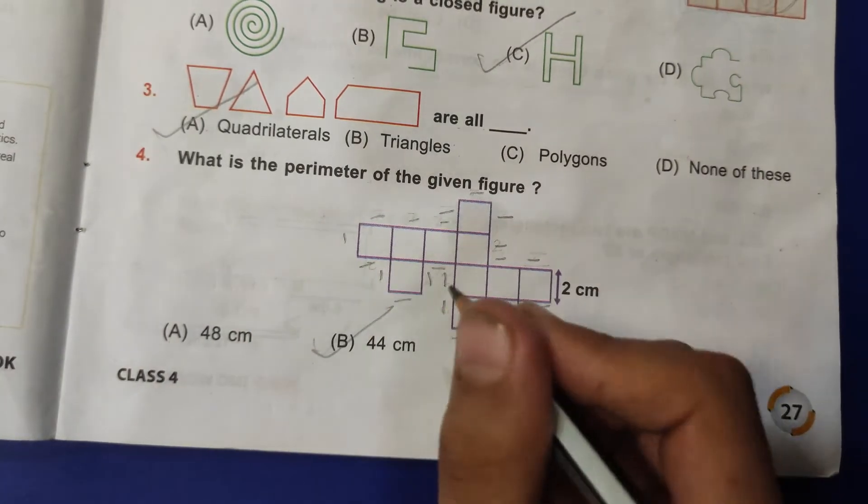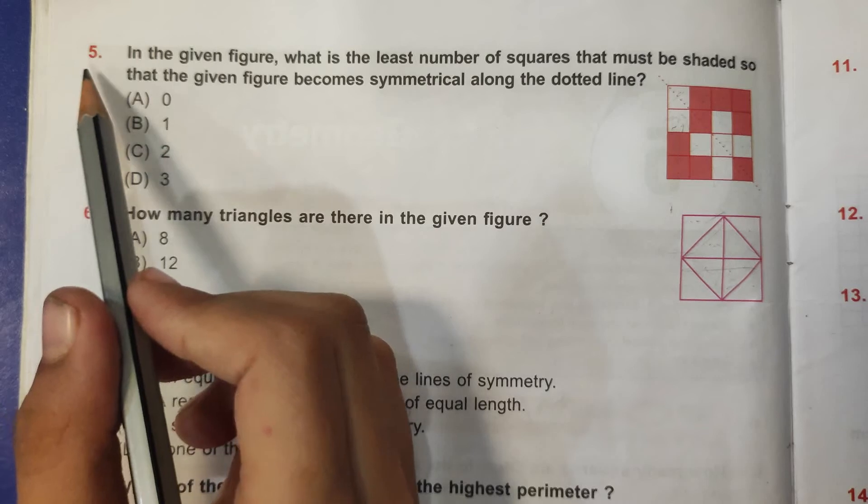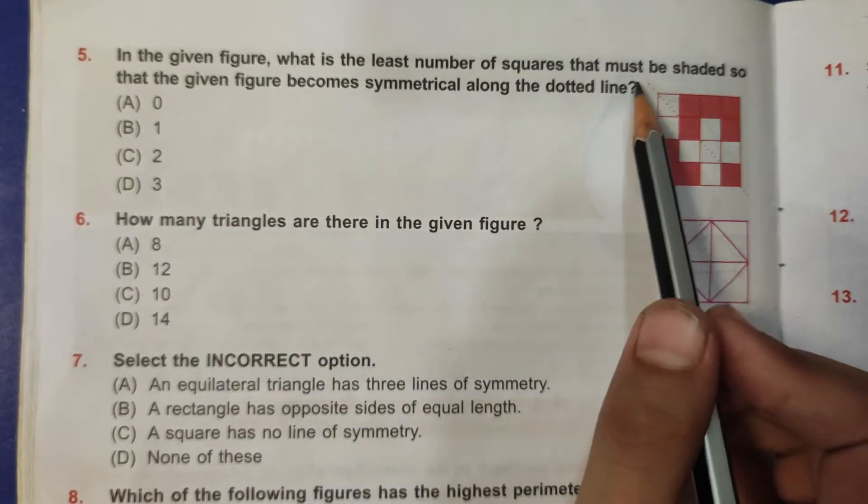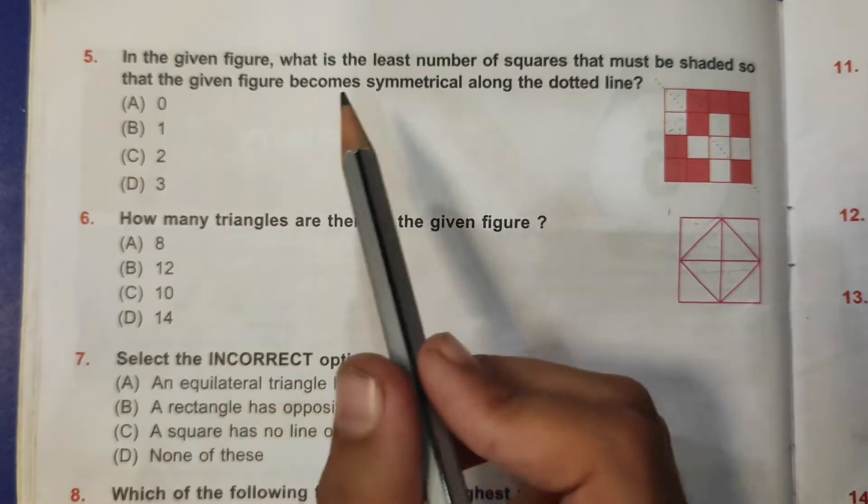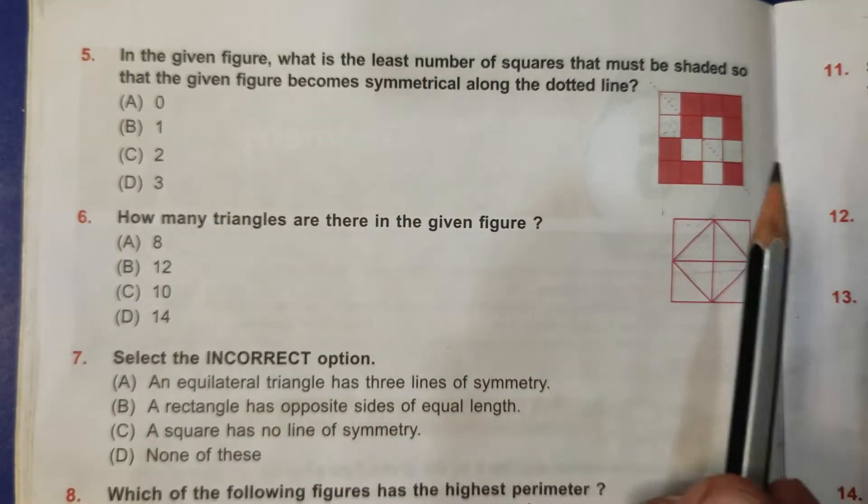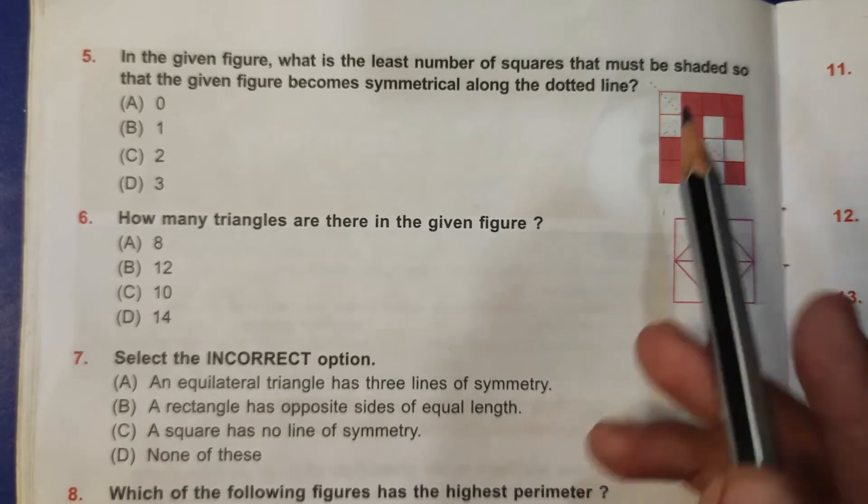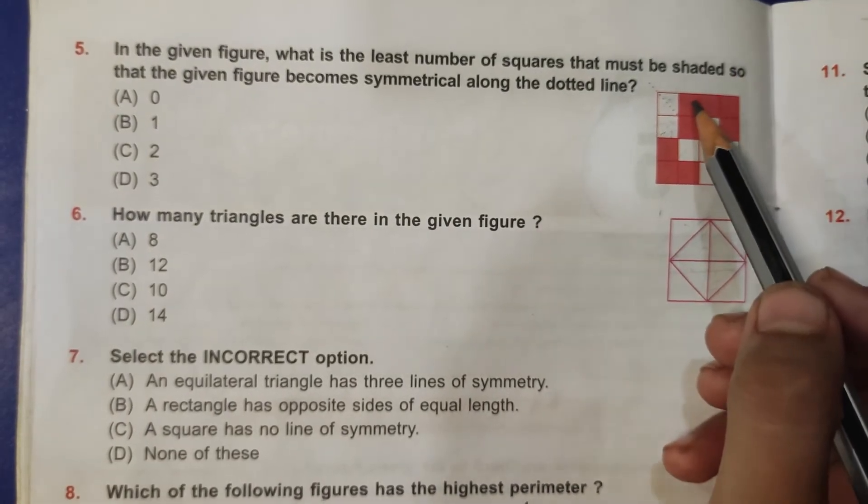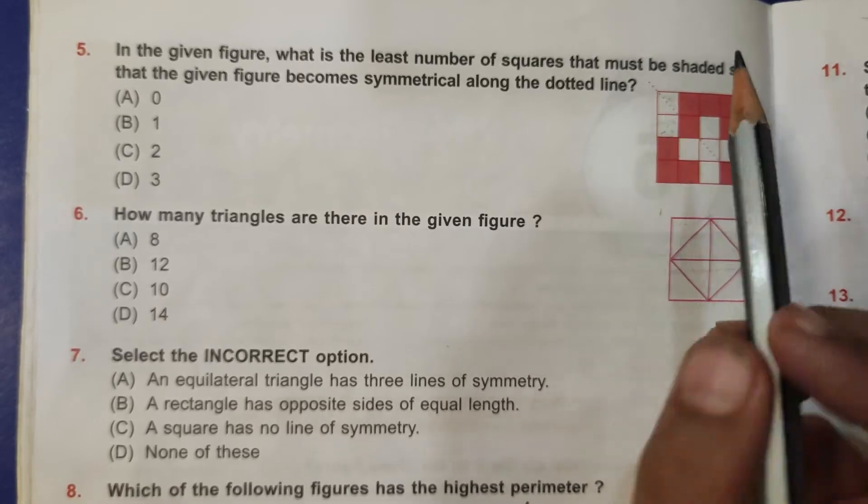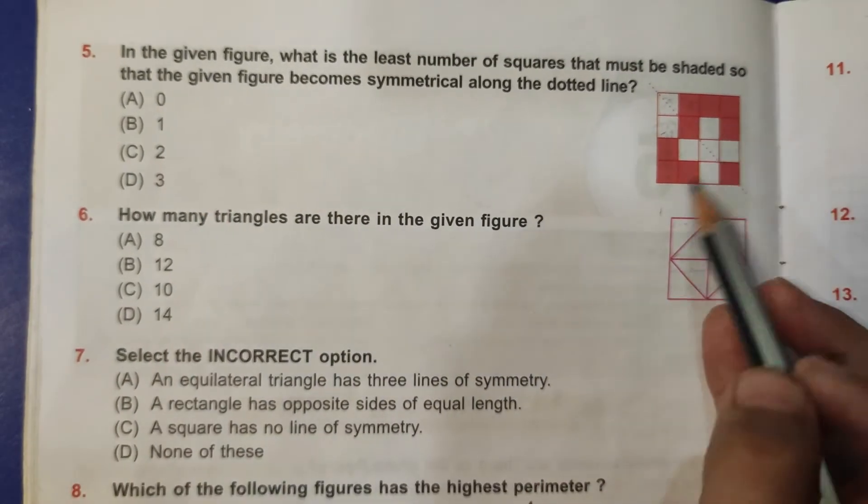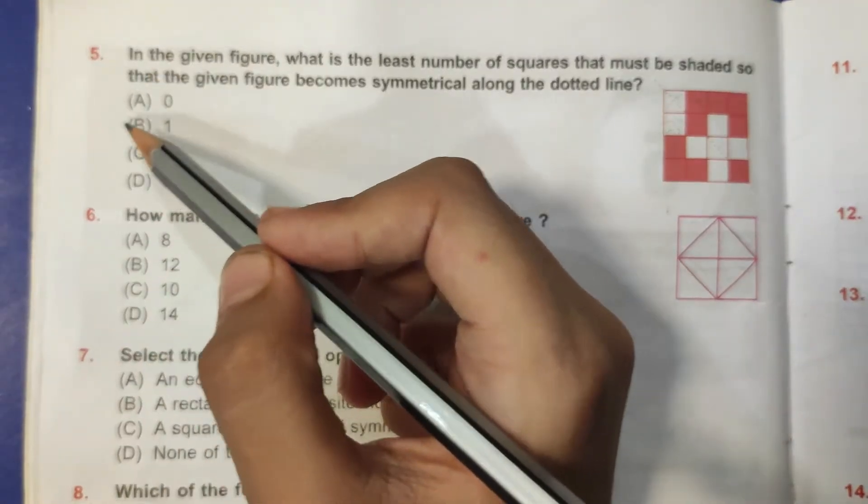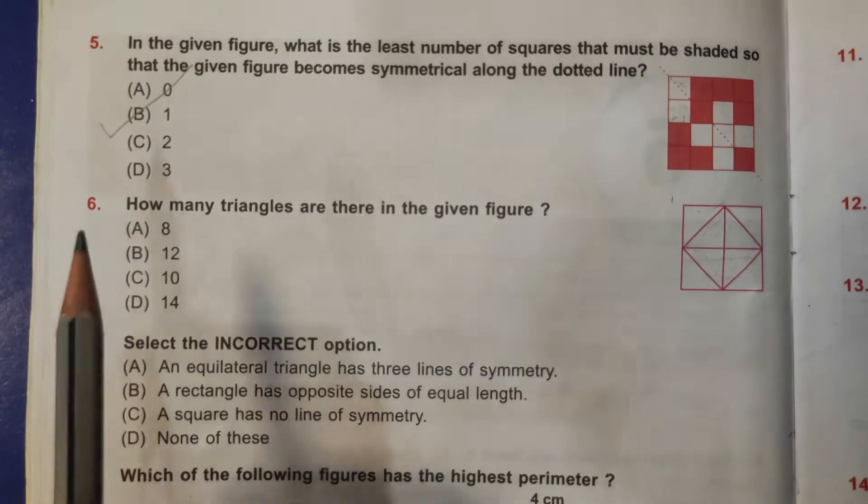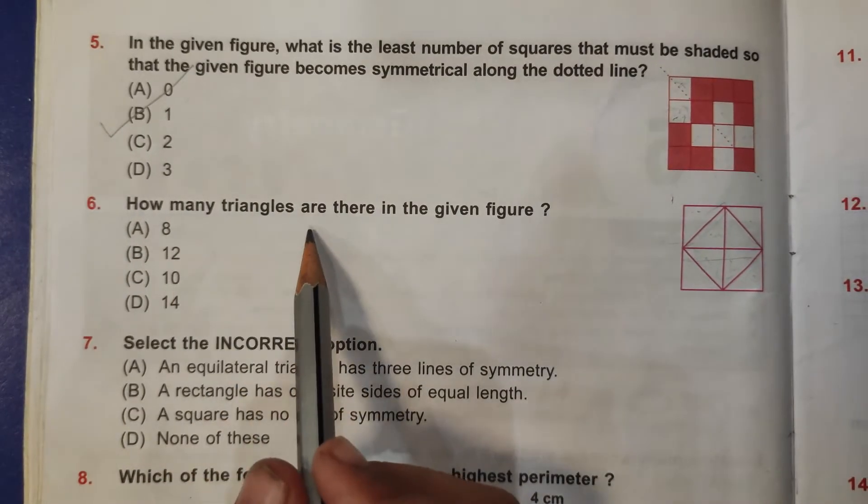Fifth question: in the given figure, what is the least number of squares that must be shaded so that the given figure becomes symmetrical along the dotted line? Here it is equal, and then here the square is shaded and here is not shaded, so it should be shaded. Means the least number of squares that can be shaded is B, 1.